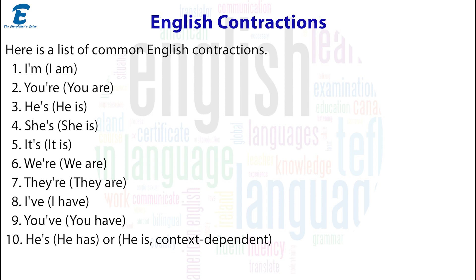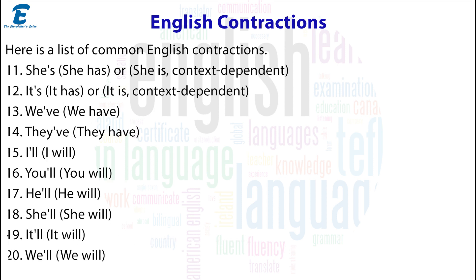9. You've = you have. 10. He's = he has or he is (context dependent). 11. She's = she has or she is (context dependent). 12. It's = it has or it is (context dependent). 13. We've = we have. 14. They've = they have. 15. I'll = I will. 16. You'll = you will. 17. He'll = he will. 18. She'll = she will. 19. It'll = it will.